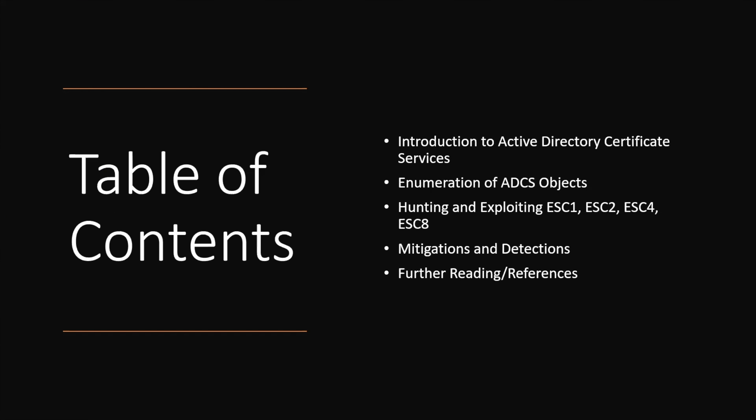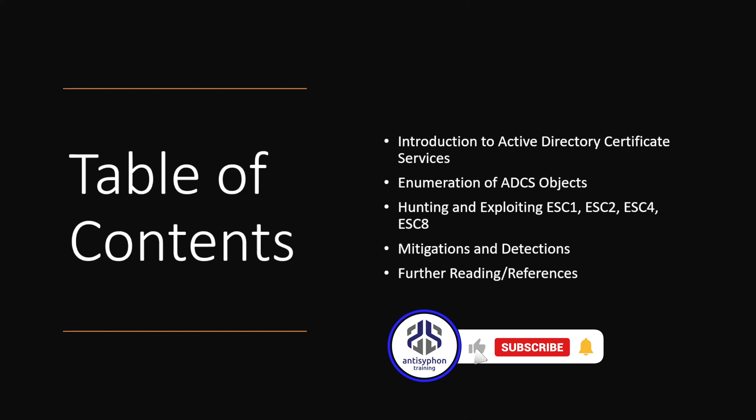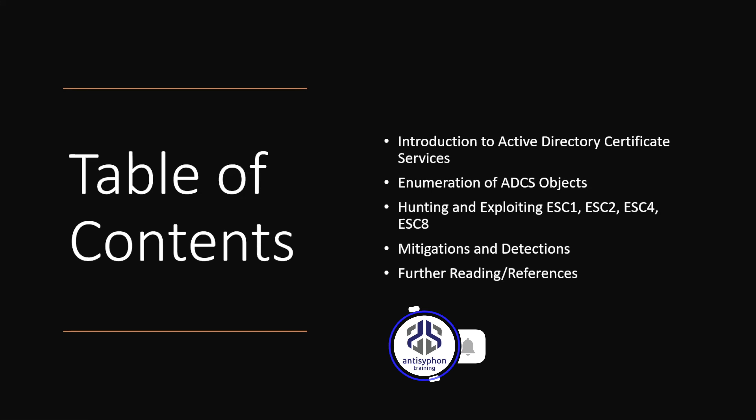We'll be looking at Active Directory Certificate Services, and how to enumerate Active Directory Certificate objects. Then we'll look at how to hunt and exploit the different privilege escalation scenarios in these templates, such as ESC1, ESC2, ESC4, and ESC8. At the end, we'll cover mitigations, detections, and references for further reading.